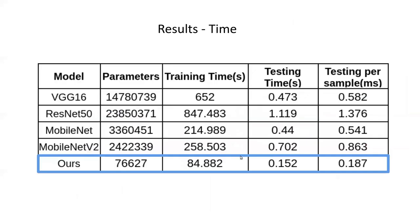We tried to keep our model simple and time efficient. We compared the parameters and time for training and testing. Our model demonstrated comparable performance while utilizing parameters that were only 0.52 percent of VGG-16, 0.32 percent of ResNet-50, 2.28 percent of MobileNet, and 3.16 percent of MobileNet V2.